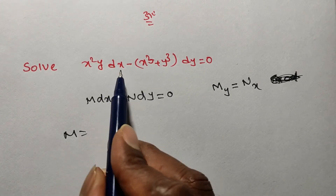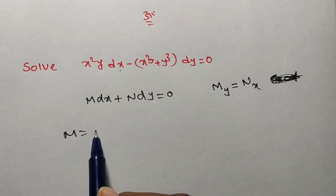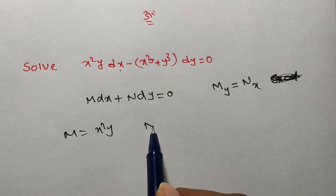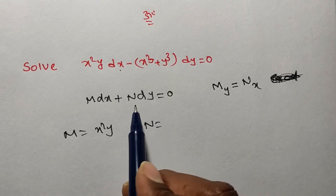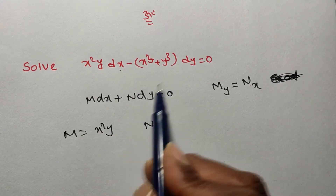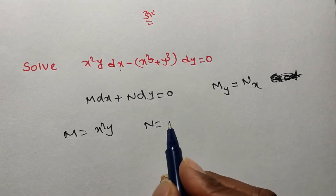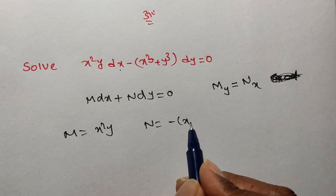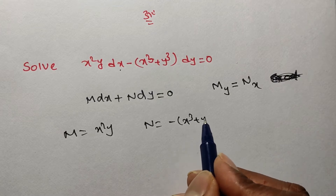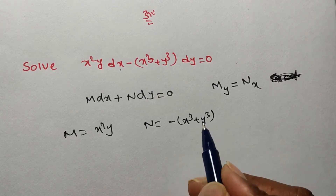The dx coefficient M in the given problem is x²y, and the dy coefficient N is minus of (x³ + y³).